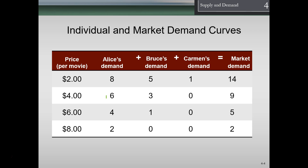Now we're going to think about the entire market. What would happen if we took individual demands and created the market demand? This would be very difficult to do exactly — basically impossible for an entire US market for any particular good because there are too many people. But conceptually, if we could gather everyone's demand information at changing prices and add all of those up, we arrive at the market demand.